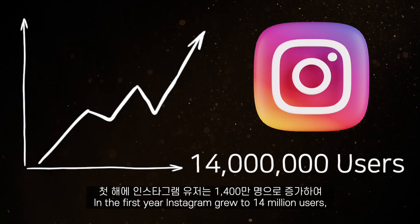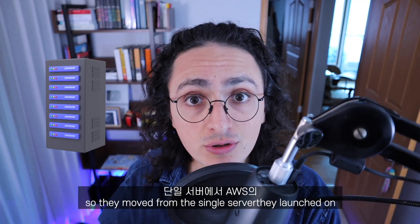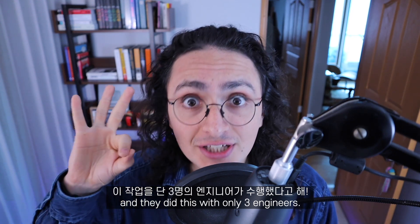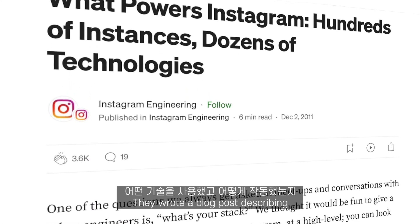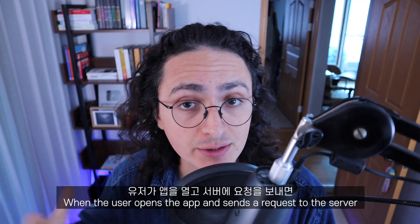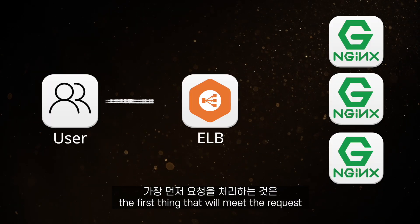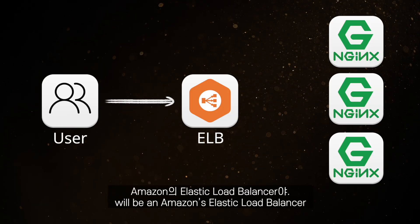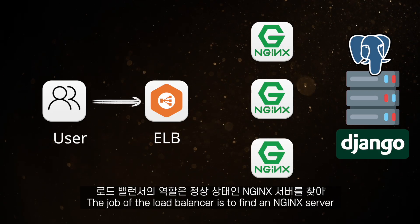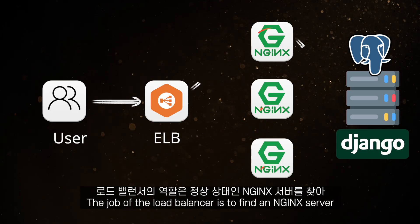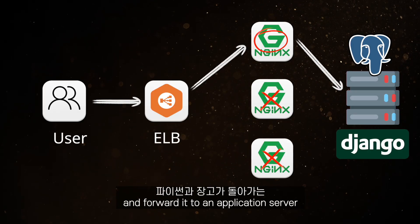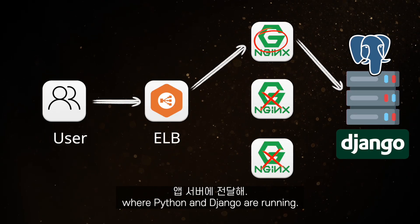In the first year, Instagram grew to 14 million users, so they moved from the single server to a better architecture in AWS — and they did this with only three engineers. They wrote a blog post describing exactly what they used and how it all works. When the user opens the app and sends a request to the server, the first thing that meets the request is Amazon's Elastic Load Balancer, which sits in front of three servers running Nginx.